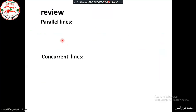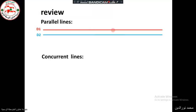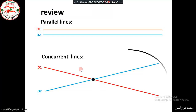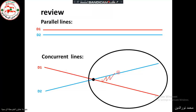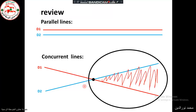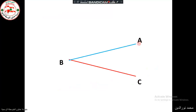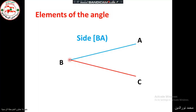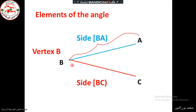Let's start with a review. If we have two lines d1 and d2 that are parallel, they will not meet. If we have two concurrent or intersecting lines, d1 and d2 intersect at a point. As we see here, there is an angle formed between these two lines. If we say angle ABC, the vertex is B, and we have a blue side and a red side.